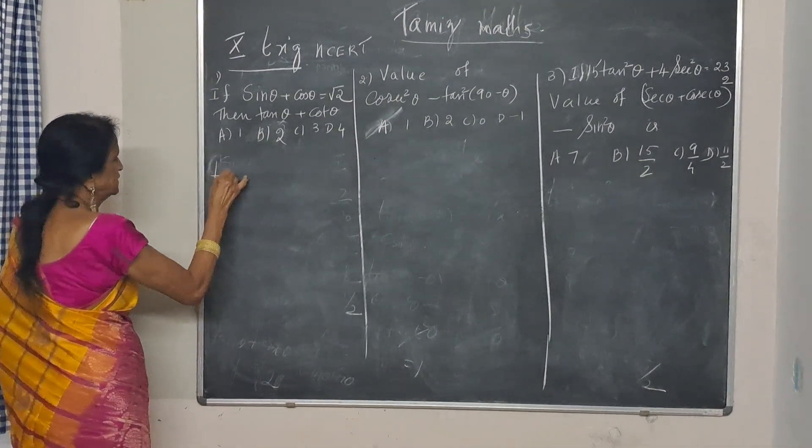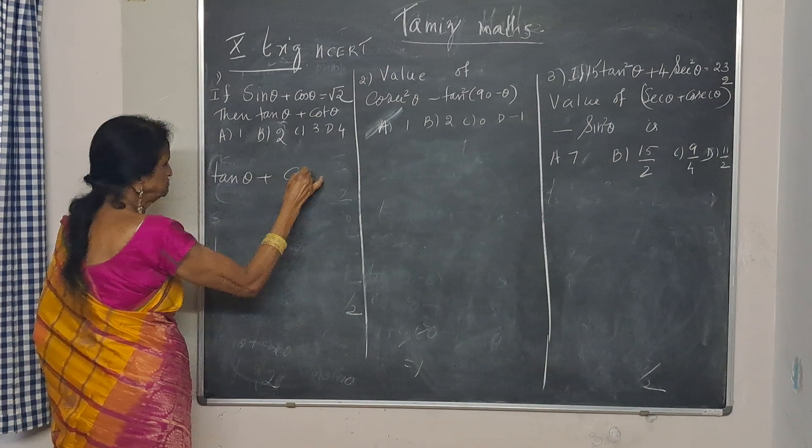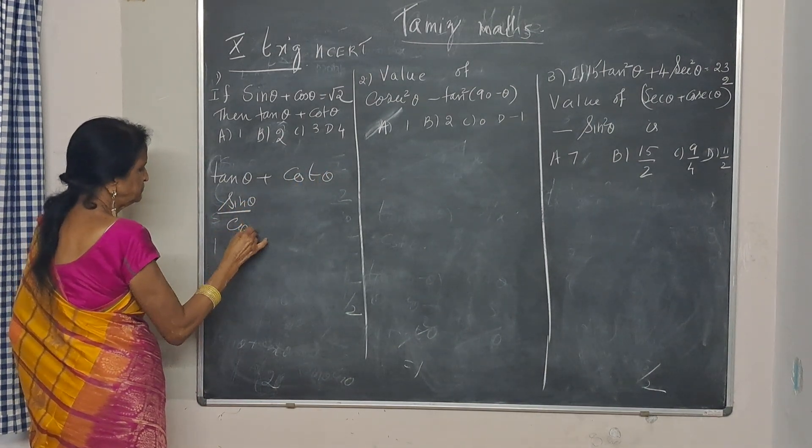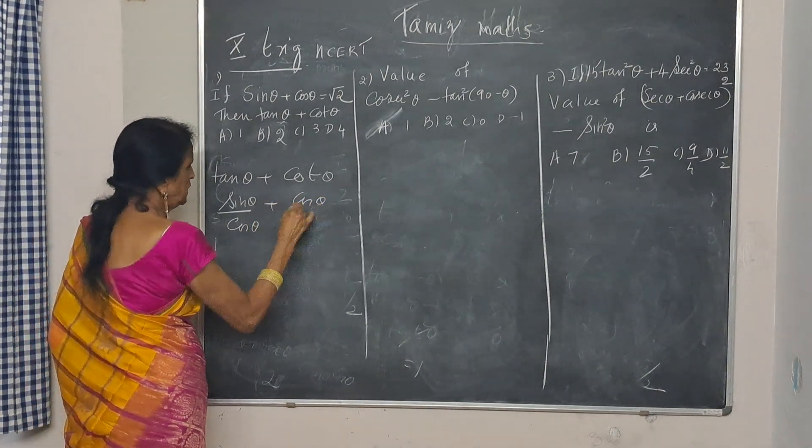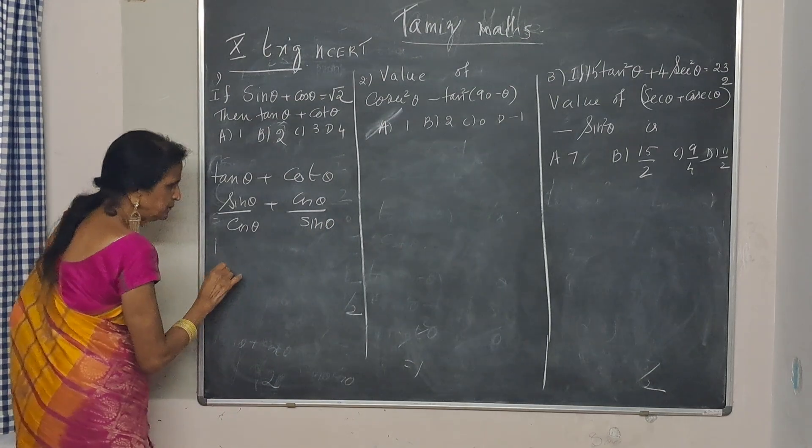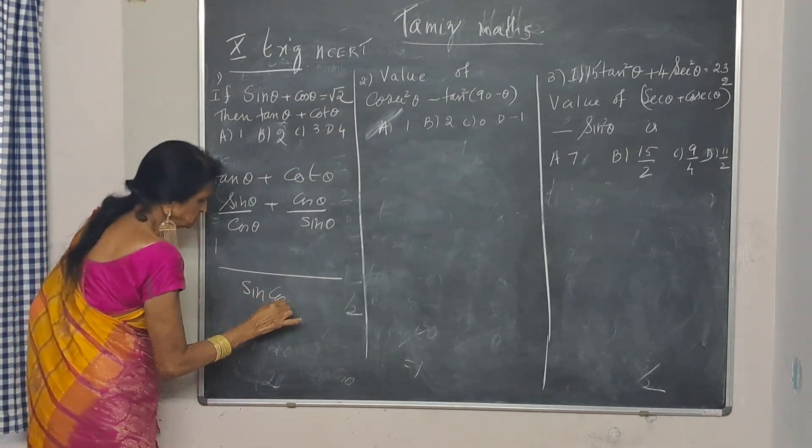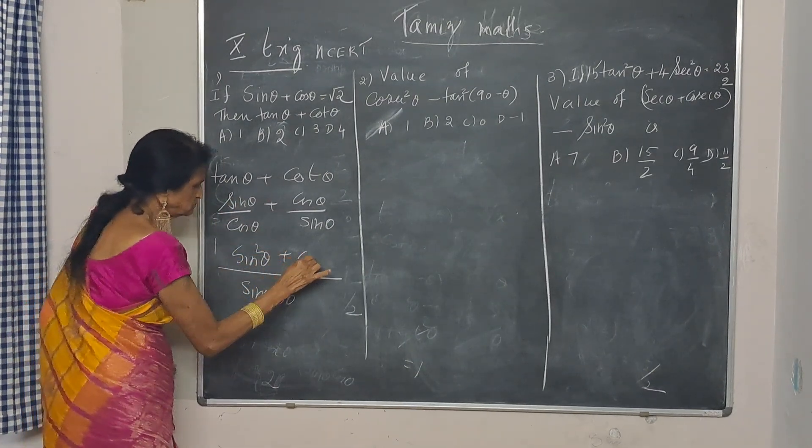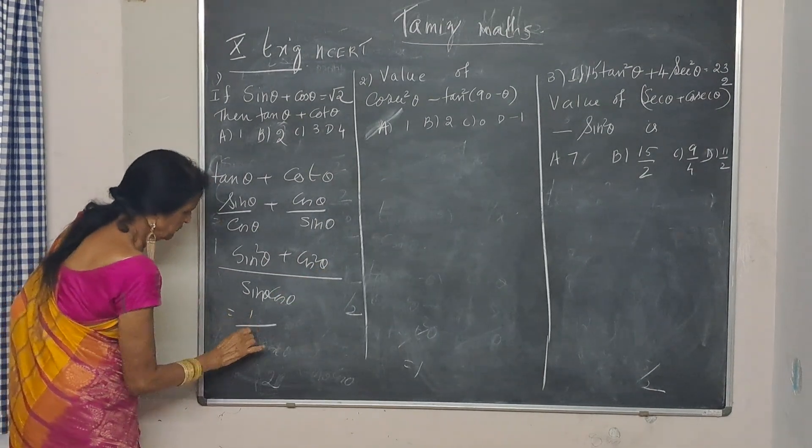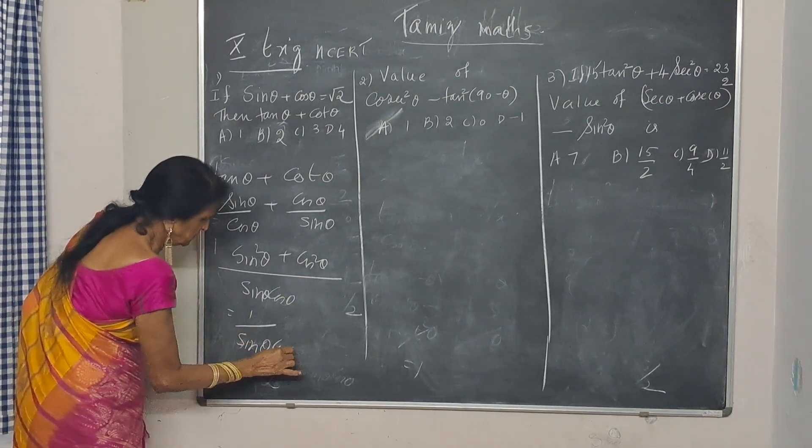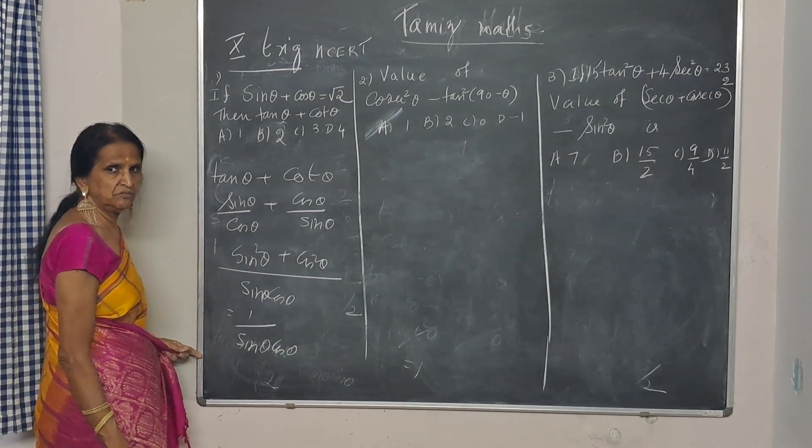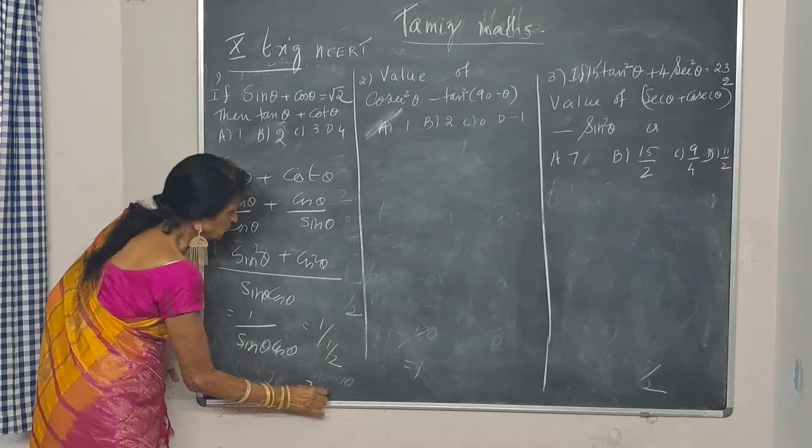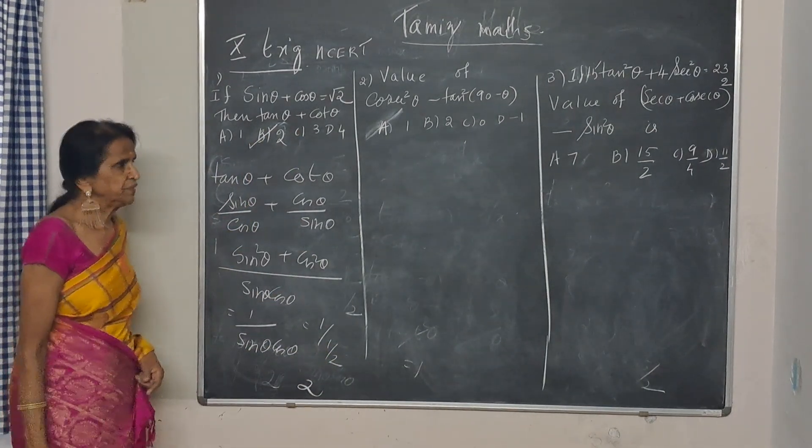Tan theta plus cot theta. Tan theta is sin theta by cos theta, and cot theta is cos theta by sin theta. So, sin square theta plus cos square theta by sin theta cos theta equals 1 by 1 by 2, which is 2. The answer is 2.